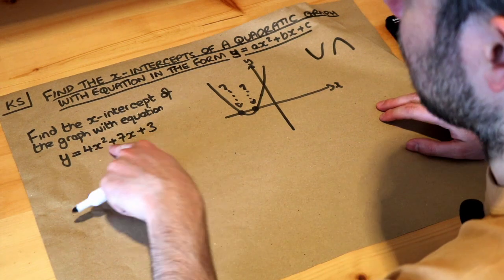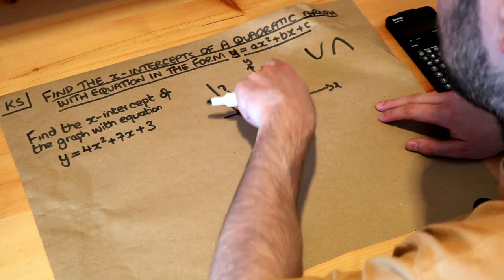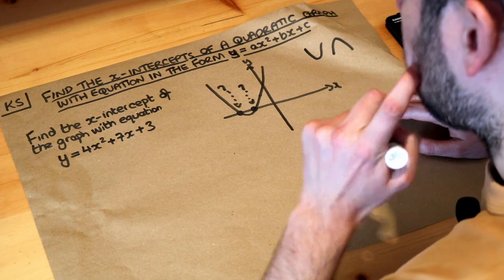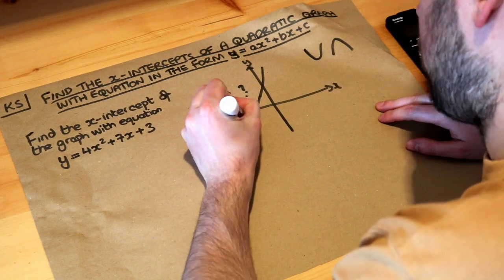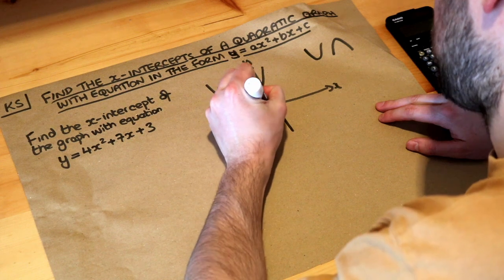If you were to take different values of x and find the y for each and then just plot those various points. Now we want to find the x-intercepts. These are the x-intercepts here, also known as roots, that's the kind of posh name for them.